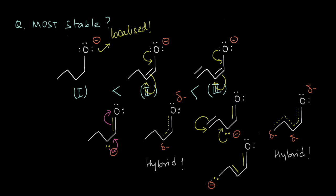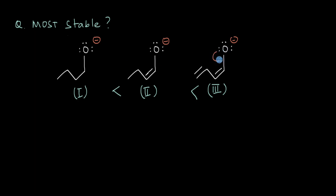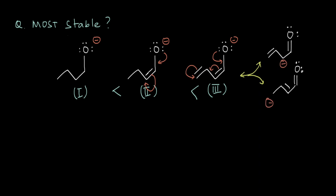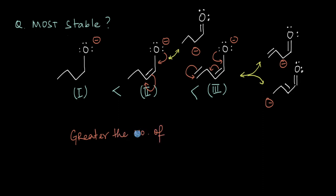The key takeaway is that greater delocalization will ultimately lead to a lower charge density, thereby making the molecule more stable and less reactive. Greater delocalization also means more resonating structures — we had three resonating structures for molecule 3 and only two for molecule 2. So we can make a rule: greater the number of resonating structures for a given molecule, greater will be the stability of the molecule.